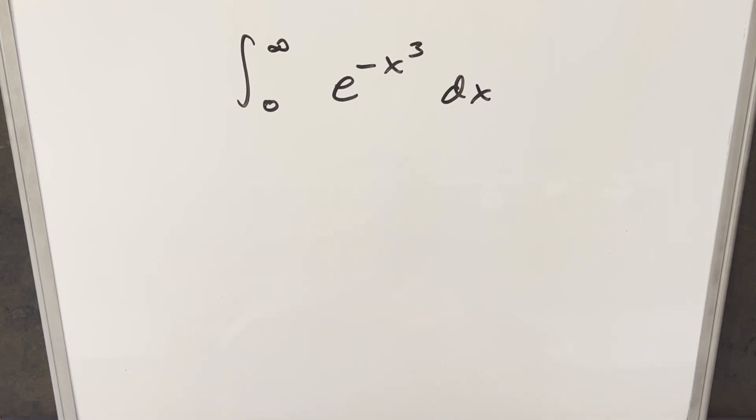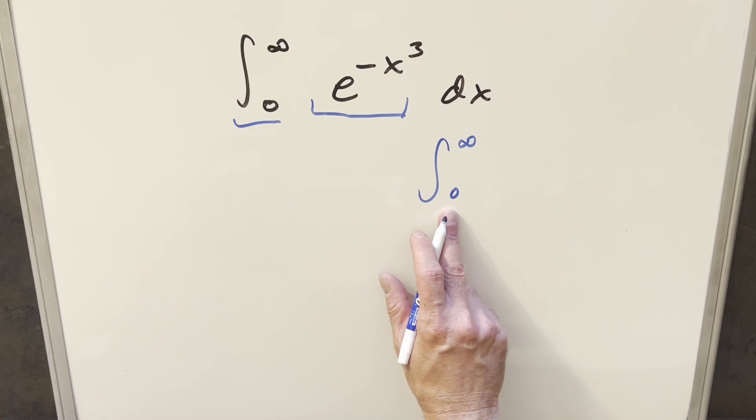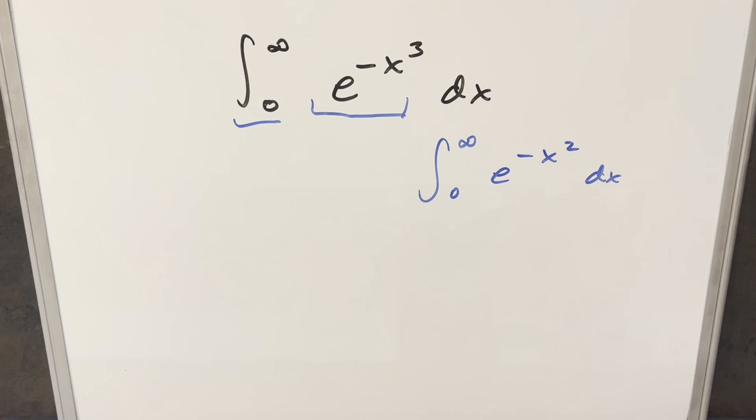The first thing I noticed is the similarity to the Gaussian integral. If we look at half of the Gaussian integral, there's another version from minus infinity to infinity. That one is e^(-x²). For the whole thing from minus infinity to infinity, it's √π. So for this half, it's actually just √π/2.